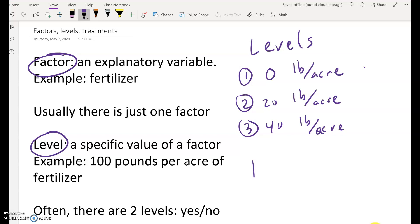And then you would have three plots of land. And plot one would get the first level, zero pounds. Plot two would get the second level, 20 pounds. Plot three would get the third level, 40 pounds. And, of course, everything else would have to be the same. Same amount of sunlight, same conditions of the soil, and so on and so forth.